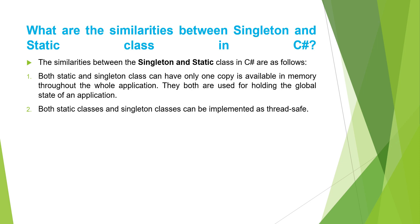Before discussing the difference between singleton versus static classes in C#, let us first discuss the similarities between them. The first similarity is both static class and singleton class can have only one instance available in memory throughout the whole application. They both are used for holding the global state of an application. The second similarity is both static classes and singleton classes can be implemented as thread-safe. We already discussed how to implement a thread-safe singleton design pattern in C# in our previous videos.